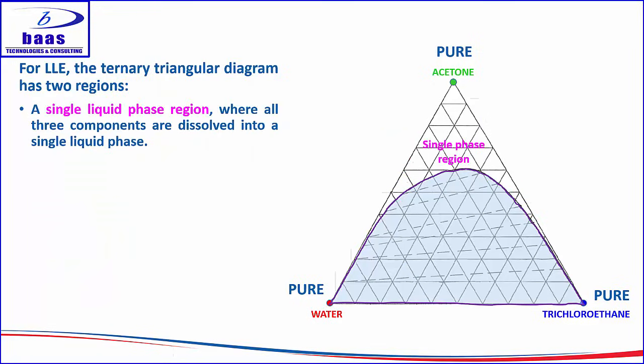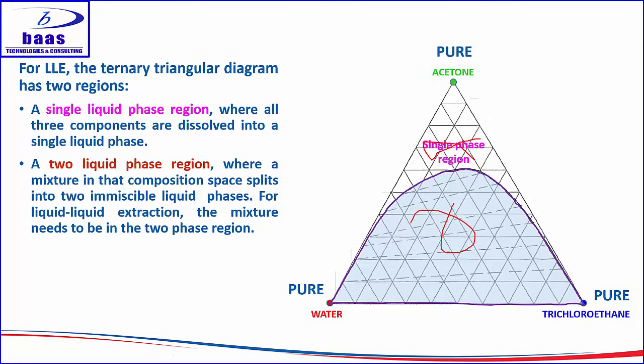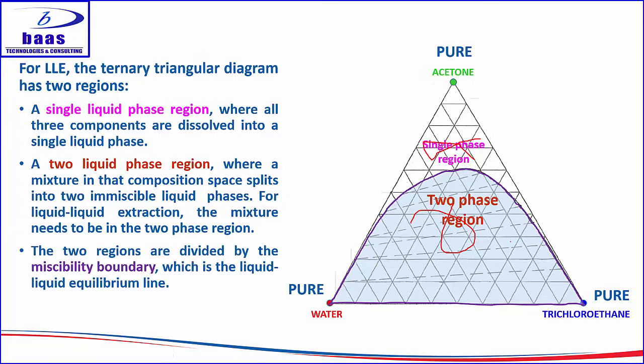In a liquid-liquid ternary triangular diagram, there are two regions: a single phase region where all three components are miscible in one liquid phase, and a two-phase region where a mixture will split into two separate immiscible liquid phases. For this acetone-water-trichloroethane system, the outer region is the single phase region, and the inner region is the two liquid phase region. For liquid-liquid extraction to occur, you need to operate in the two liquid phase region; the two regions of immiscibility are divided by the miscibility boundary, which represents the liquid-liquid equilibrium.